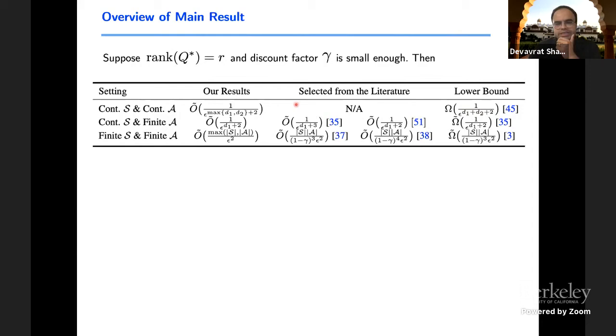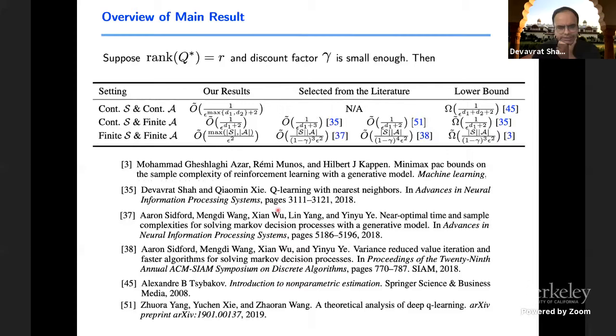For simplicity, let's think of D1 equals to D2, then it scales like epsilon to power minus D minus two, compared to a lower bound, which is 2D. So in a sense, we go from two times D to single D. And again, that's happening is because we have a finite rank. And there is a constant hidden that depends on rank R. So of course, if R goes to infinity, this result would become vacuous in some sense. In the context of finite state and action, what this would mean is that instead of having a multiplicative bound, it would have the max of S comma A in the same manner.